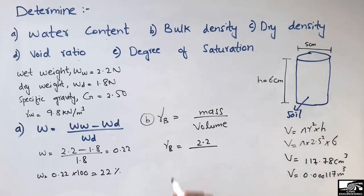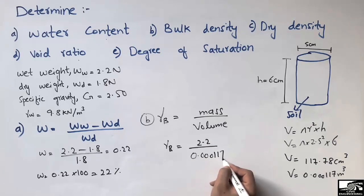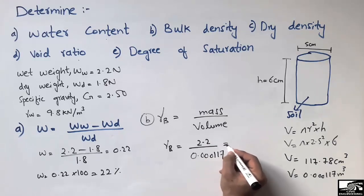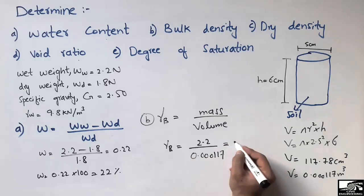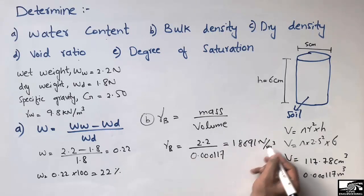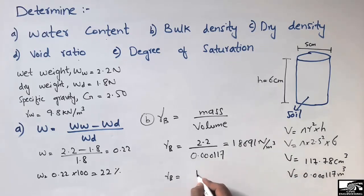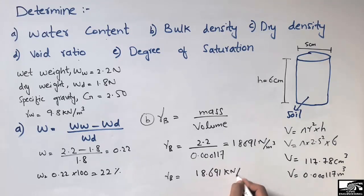Converting 117.78 cubic centimeters into cubic meters gives 0.000117 cubic meters. Dividing 2.2 Newton by this volume, the bulk density comes out to be 18,691 Newton per cubic meter. Converting to kilonewtons by dividing by 1000, we get 18.691 kilonewton per cubic meter.